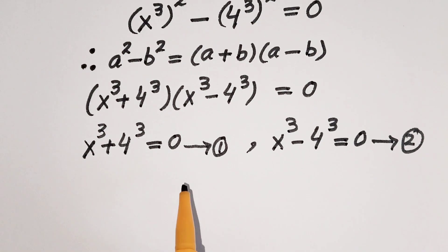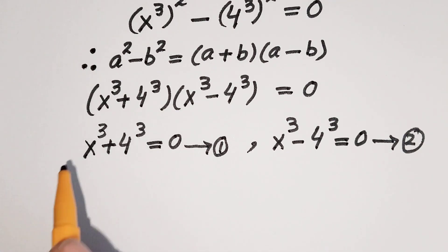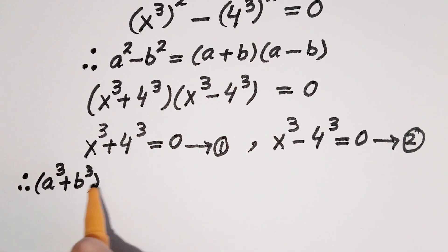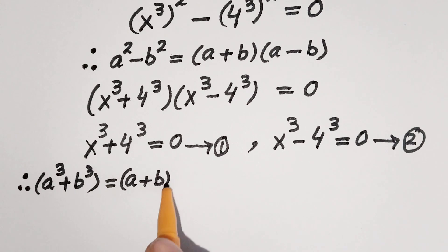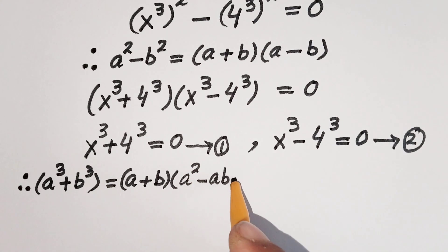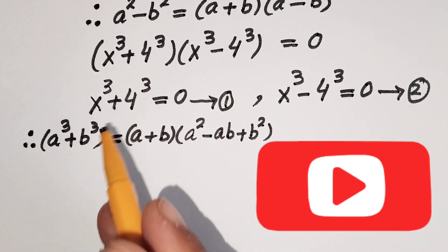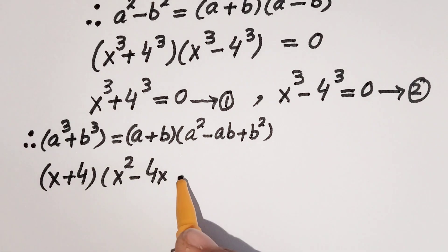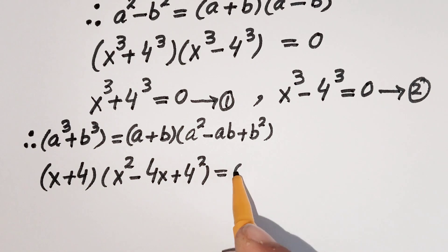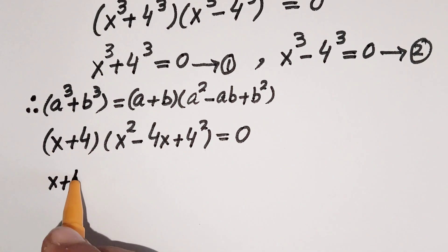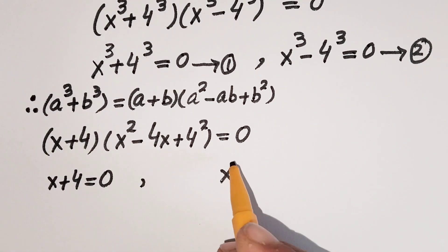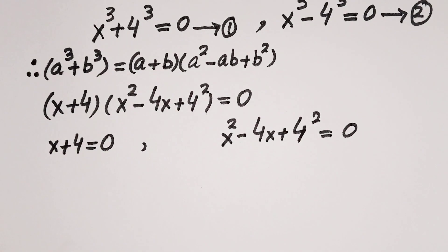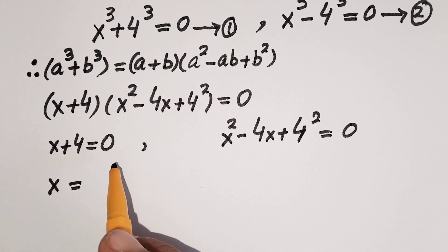Solving Equation 1: x³ + 4³ = 0. We see this is a sum of cubes, so using the algebraic formula a³ + b³ = (a+b)(a²- ab + b²), we get (x + 4)(x² - 4x + 4²) = 0. This gives two conditions: x + 4 = 0, which means x = -4.